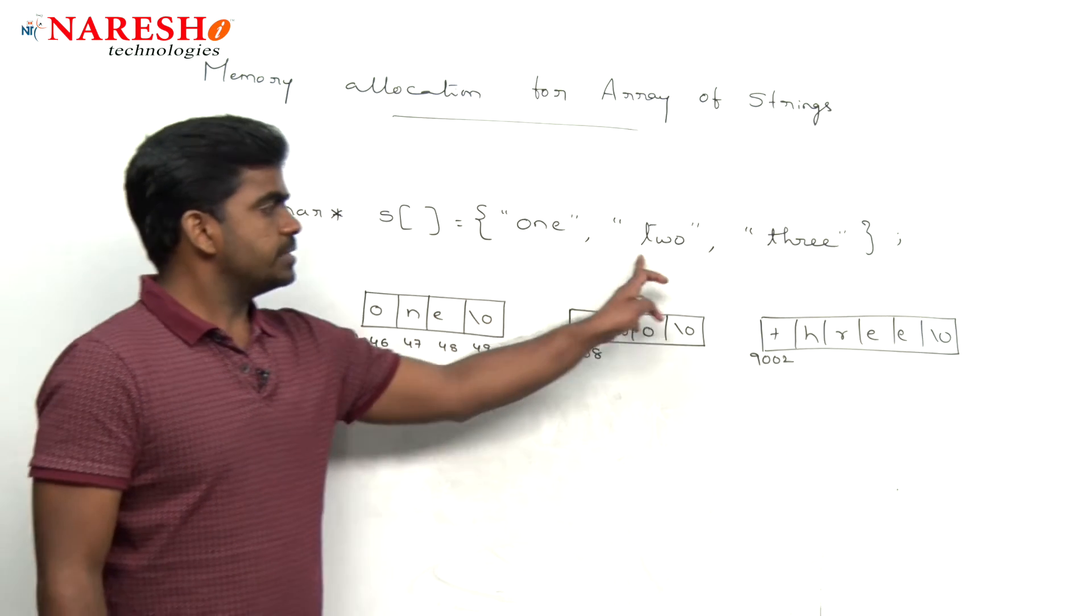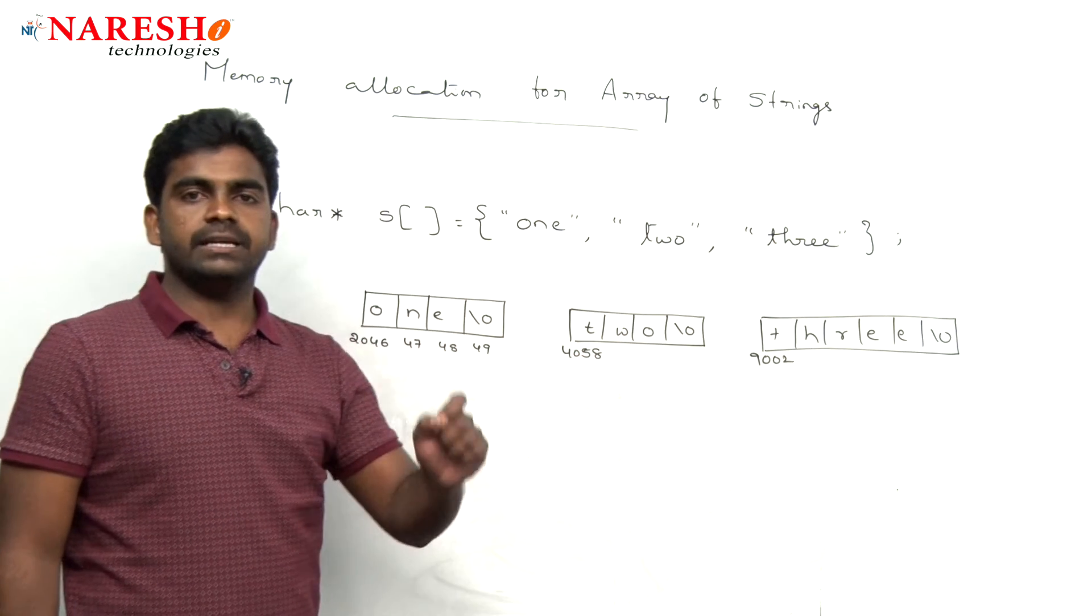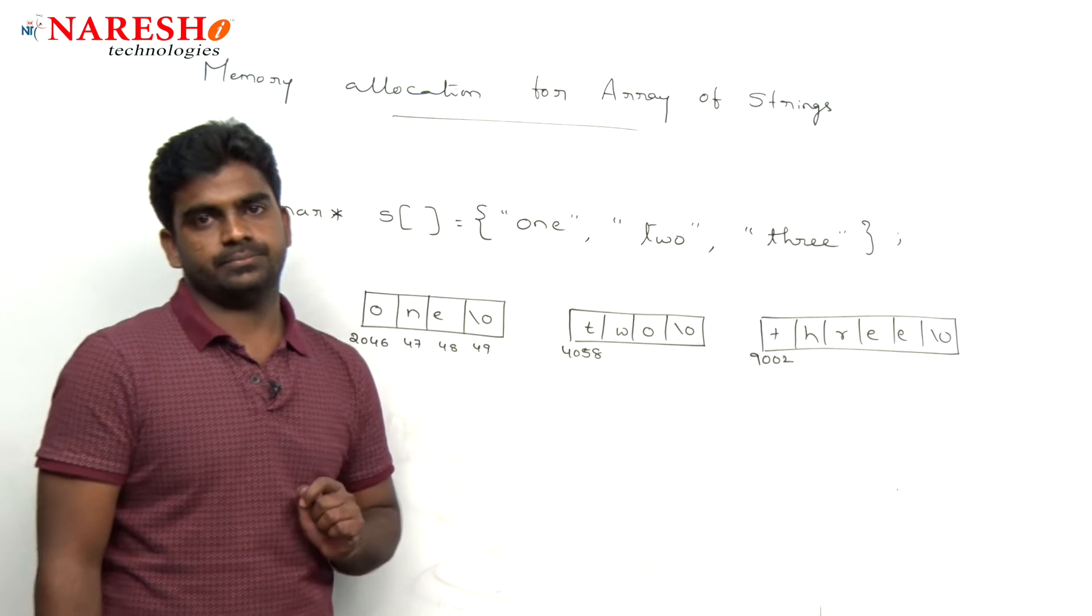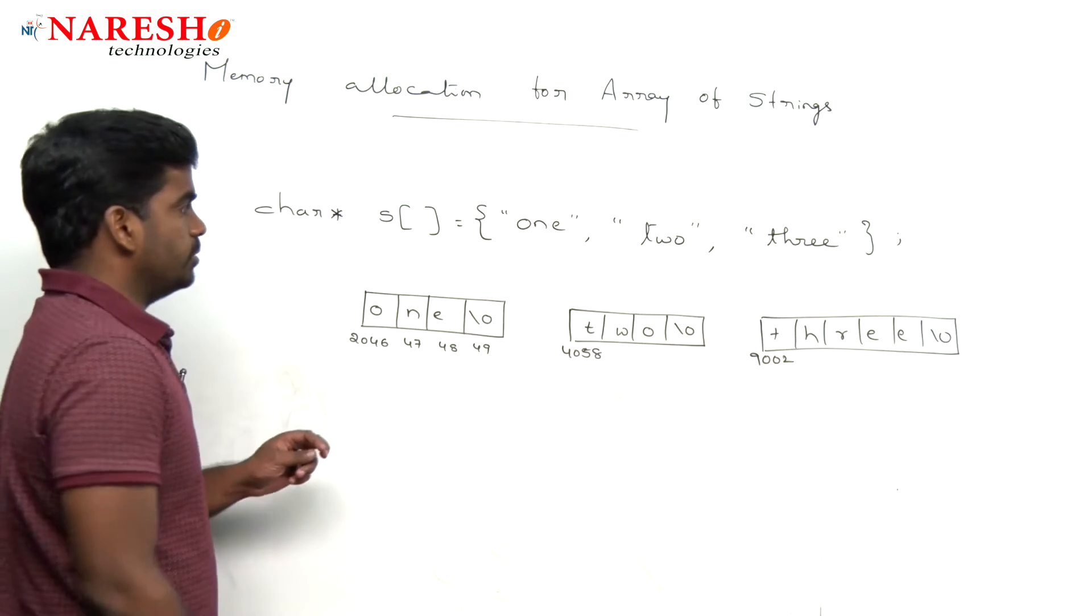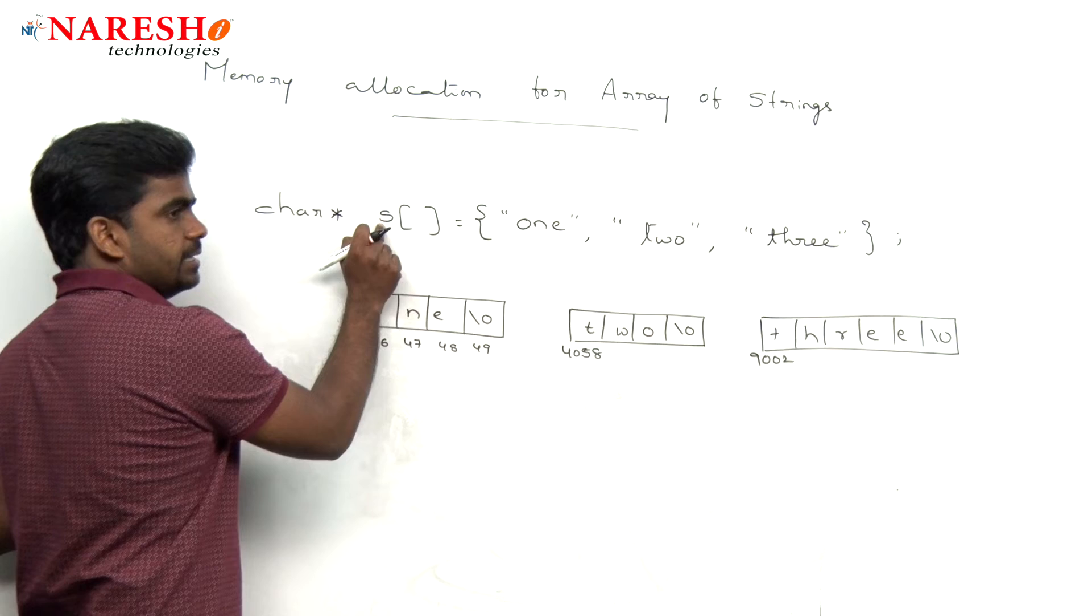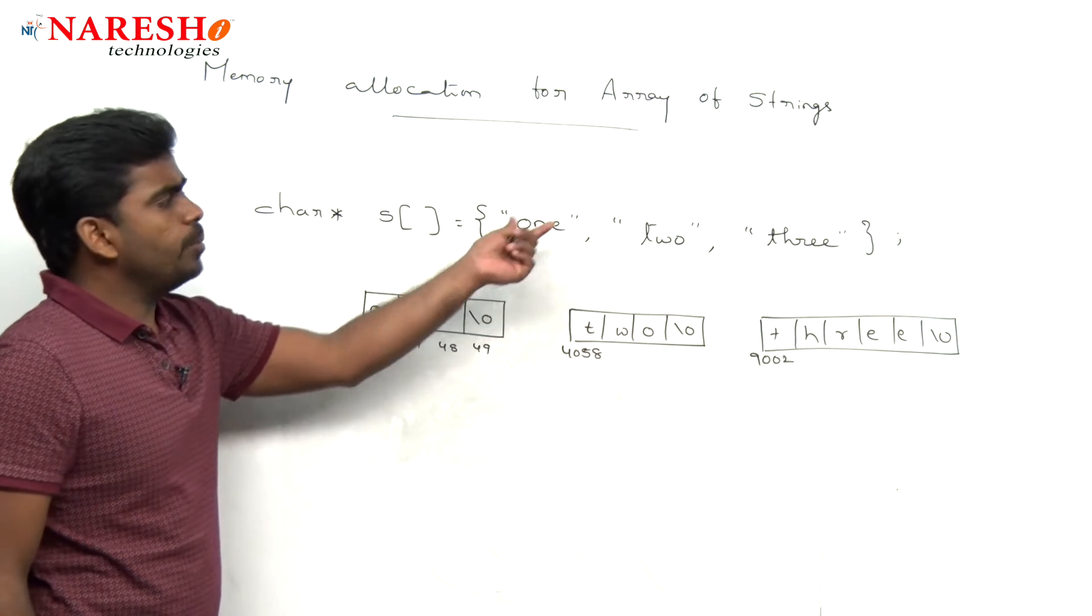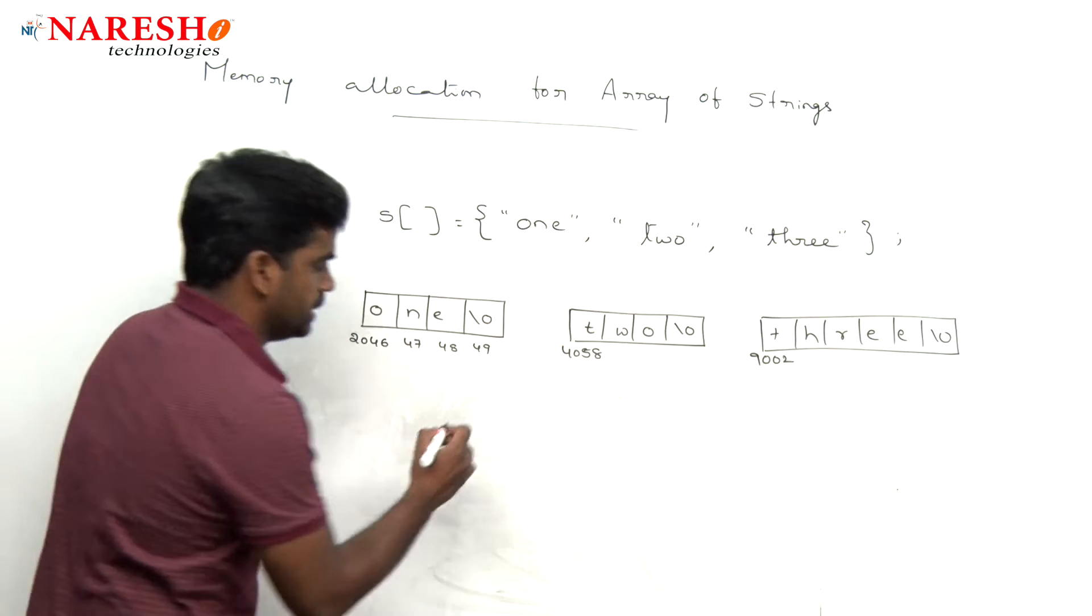The three strings get memory at three different locations. And now, here is the string array. What is the size? How many elements are there? Three.